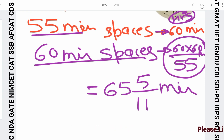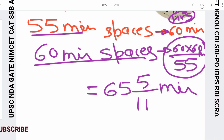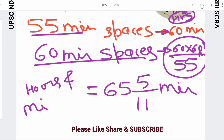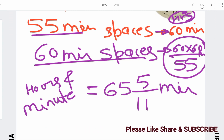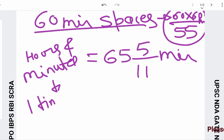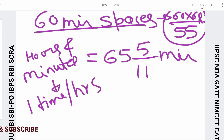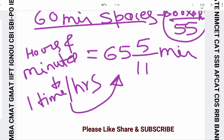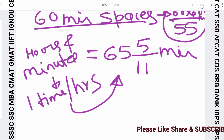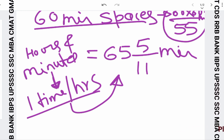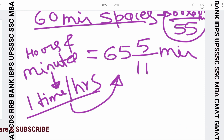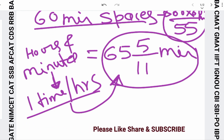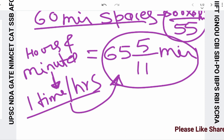As I told you in the last lecture in our theory, the hour hand and the minute hand coincide one time per hour, and that time is after 65 5/11 minutes. We derived here that after every one hour, the hands actually take 65 minutes and 5/11 of a minute — that is, 65 5/11 minutes — to coincide.